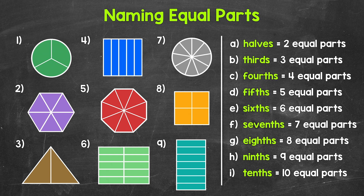When it comes to fractions, a whole is divided into equal parts, and these equal parts have names. Knowing these names is important when it comes to working with fractions. We will cover 2 equal parts up to 10 equal parts in this video. Now keep in mind, fractions don't stop at 10 equal parts — we can have 12, 25, 30 equal parts, whatever the case may be. But this is a nice place to start and build off of.